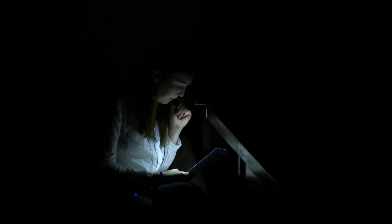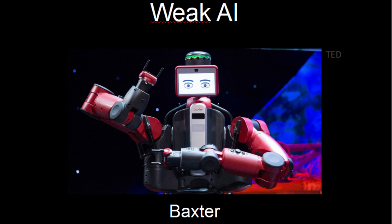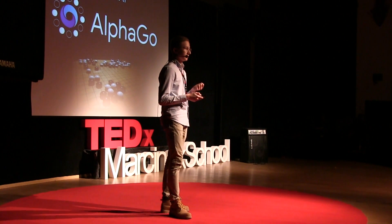We're very good at creating weak AI. A more complicated and advanced example of weak AI is Baxter. He's a robot that is supposed to help you move around objects — this can be in a factory by picking up water bottles and putting them into boxes, or he can help you fold your clothes or put together IKEA chairs. We're so good at making weak AI that we can teach it how to be better than us in some things.